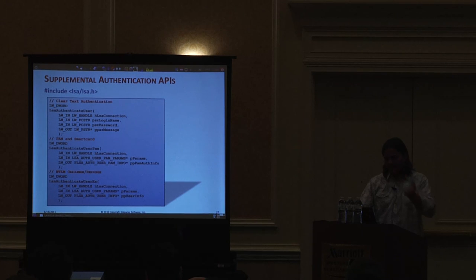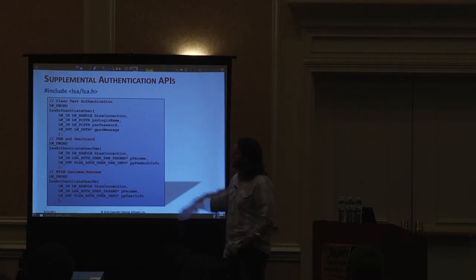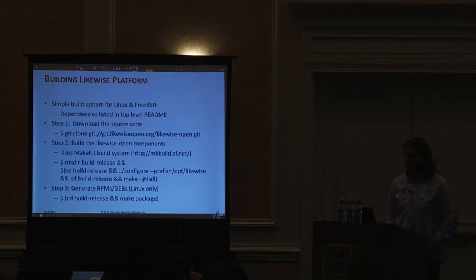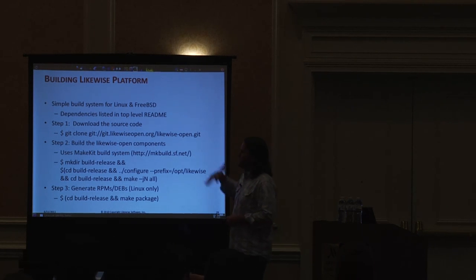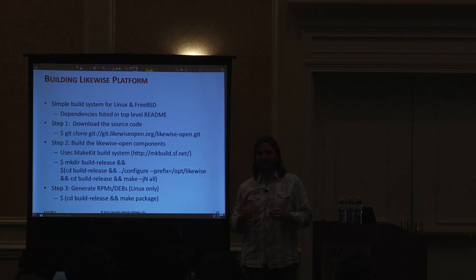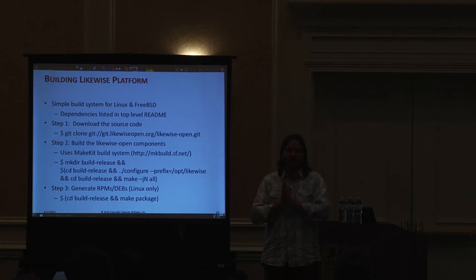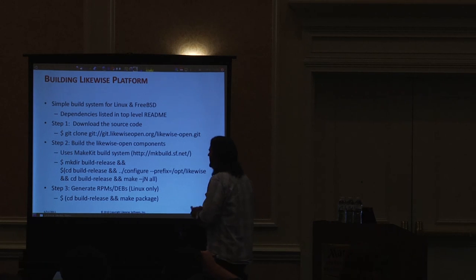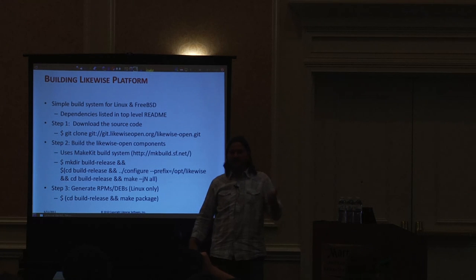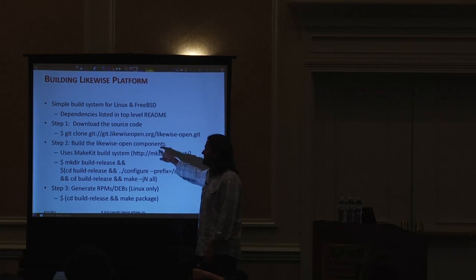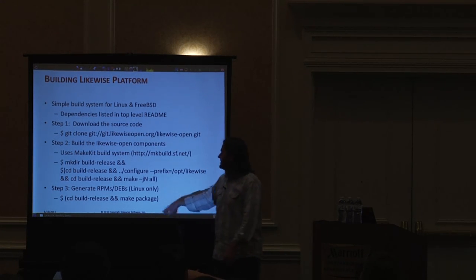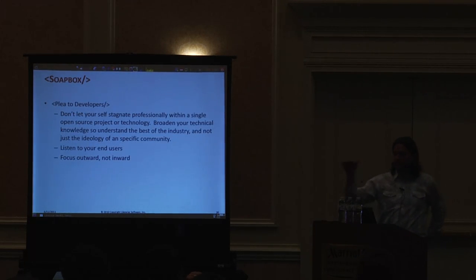My time's almost up. I'll make these slides available — a few more details on authentication APIs. If you want the Likewise platform, you can grab it from Git. We've recently moved to a build system called MakeKit — I cannot sing its praises enough. It cut our build times by over 60 percent and proved that recursive directories is harmful to make. It's a replacement for libtool and autoconf, and it's been amazingly fast. The build system is mainly for Linux and FreeBSD at the moment, and we support RPMs and DEBs.